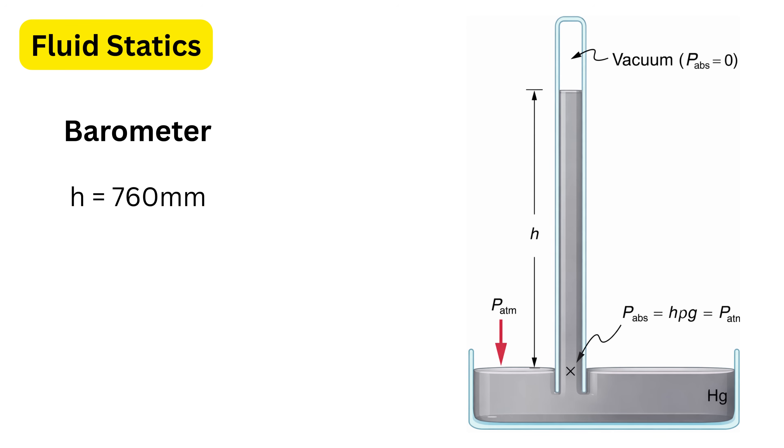This height turns out to be 760 millimeters or 0.76 meters. The space above the mercury column inside the tube has almost no air in it, so a vacuum is created there. This vacuum is called the Torricelli vacuum, and it shows that the mercury column is supported only by atmospheric pressure.